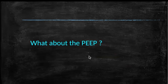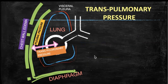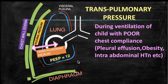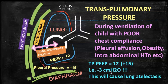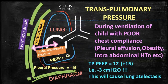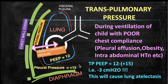The same issue applies to PEEP. With obesity, ascites, or chest wall edema, suppose your PEEP displayed on the ventilator is 12 — quite high for pediatric patients — and due to poor chest wall compliance the pleural pressure is 15. Then trans-pulmonary pressure during expiration = 12 minus (+15) = −3 centimeters of water, meaning there will still be atelectasis despite the high PEEP.